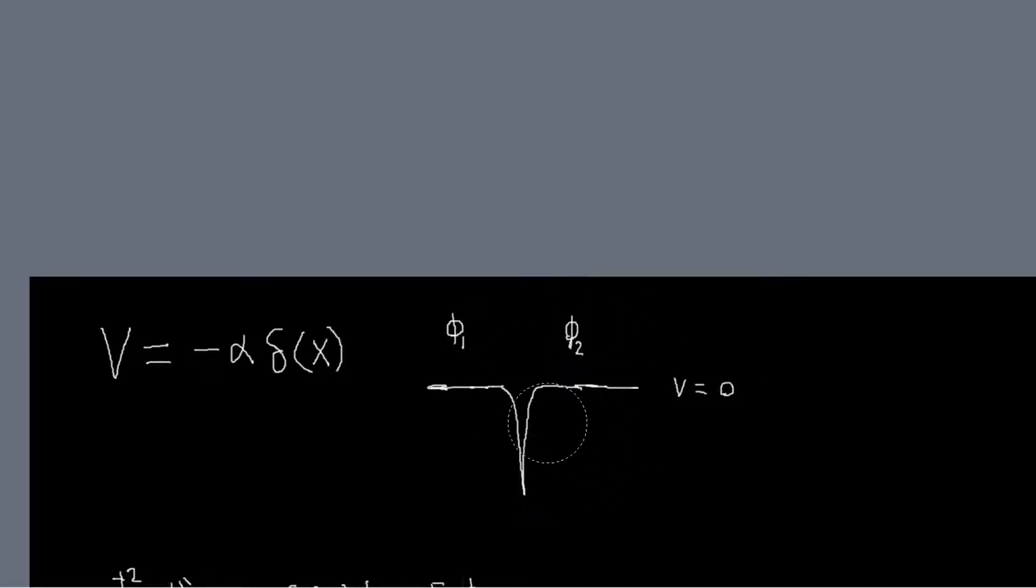So we just want to tackle this problem like we've done all the other ones. We'll obviously have two regions, one to the left of the well and one to the right of the well. And you might try and have another region inside the well, but because the well is infinitely thin, you can't really do that. So we're just going to have these two regions.